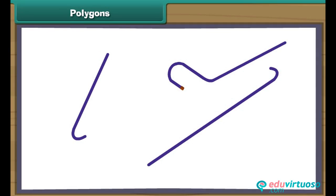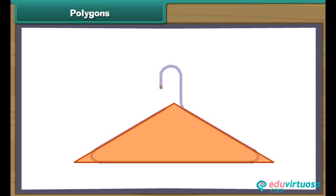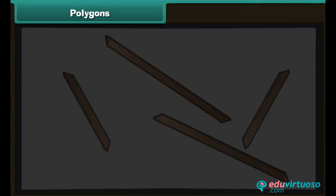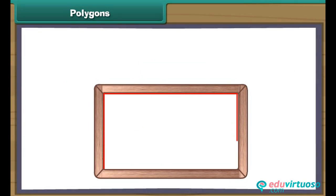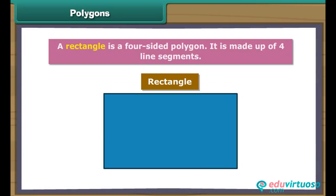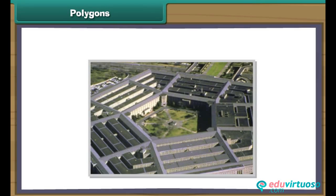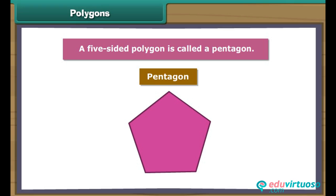We take three pieces of plastic and join them to form a towel hanger — we have created a triangle. A triangle is a polygon made up of three line segments and is the smallest polygon possible. We use four pieces of carved wood to create a photo frame — a rectangle, which is a four-sided polygon made up of four line segments. The US Army Headquarters is known as the Pentagon as it has five sides — a five-sided polygon is called a pentagon.